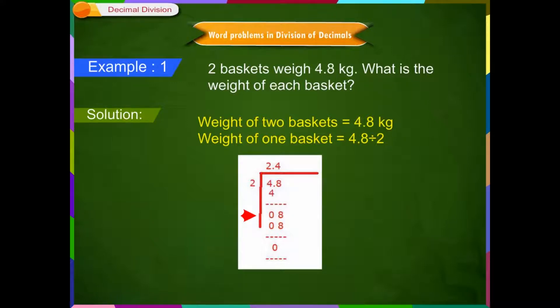Step 2: Bring down 8. Now we are in the tenth place, so put a decimal point and divide 8 by 2. The quotient is 4 and remainder is 0. Step 3: So, the weight of each basket is 2.4 kg.